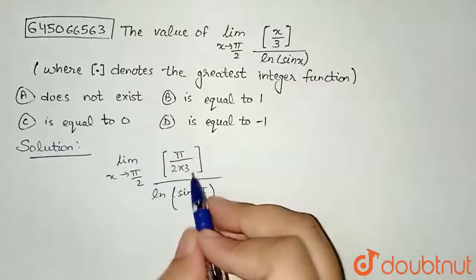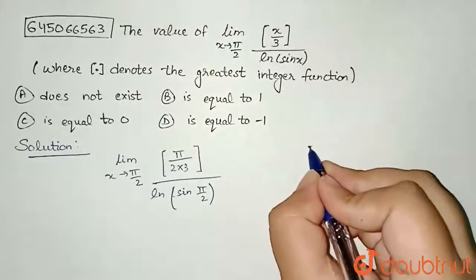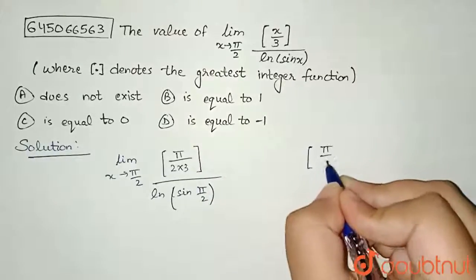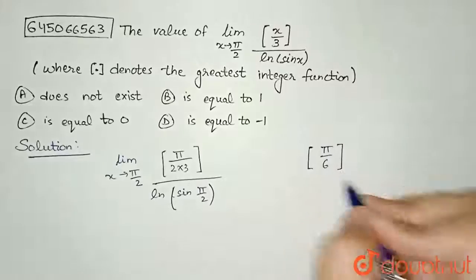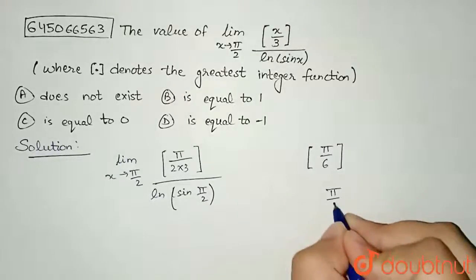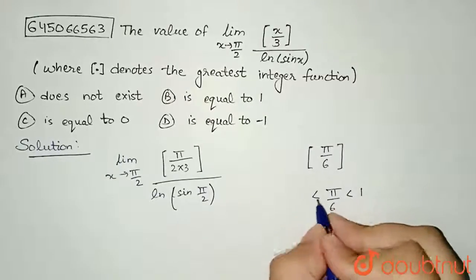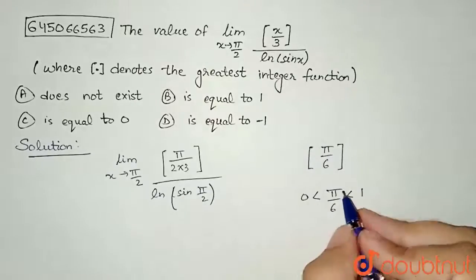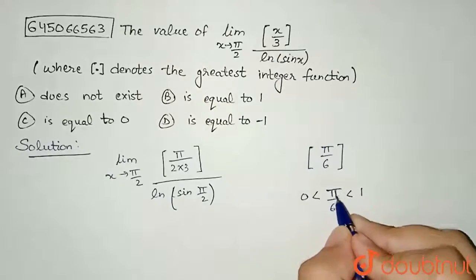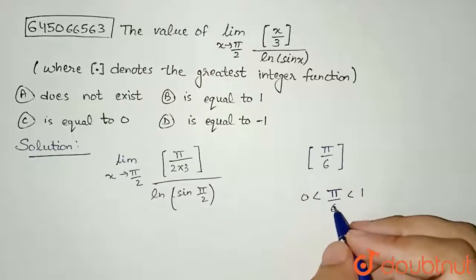If I talk about this integer part function, the greatest integer function is the integer part of π/6. If we see, π/6 is less than 1 and is greater than 0, because the value of π we'll take as 22/7.